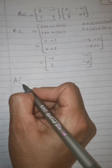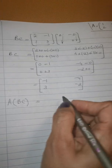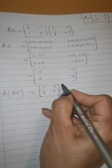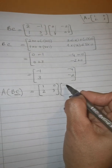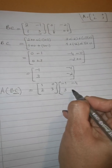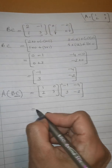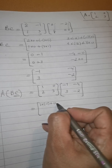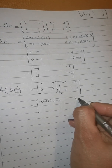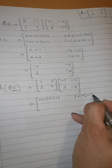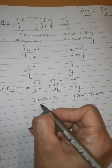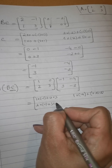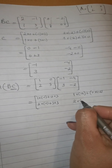Now we have to find A multiplied by BC. I write matrix A which is [1, 2; 0, 3] and in place of BC I write the product of B and C. Same procedure: 1×(-1) + 0×3, 2×(-4) + 0×(-2), then 2×(-1) + 3×3, and 2×(-4) + 3×(-2).